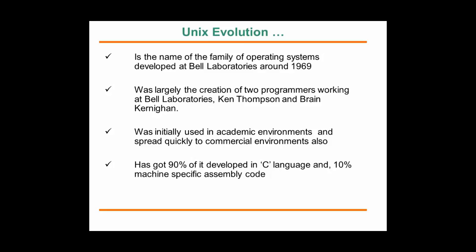UNIX is the name of a family of operating systems developed at Bell Laboratories around 1969. It was largely the creation of two programmers, Ken and Brian. It was initially used in academic environments and, because it was so popular, it quickly spread to commercial environments. About 90% of its code was developed in C language and 10% in machine-specific assembly code such as add, multiply, and similar instructions.